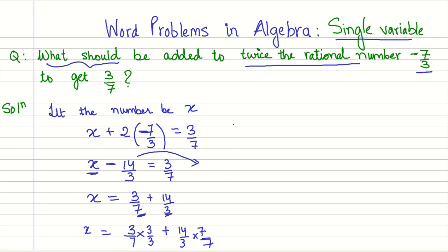So now let's proceed further to solve this. When we simplify this, we get x equals 3 times 3, 9 by 21 plus 14 times 7 gives you 98 by 21.